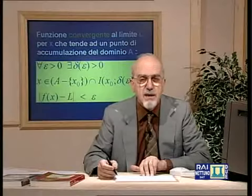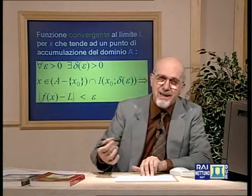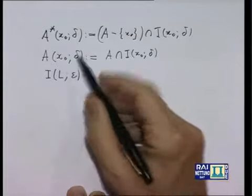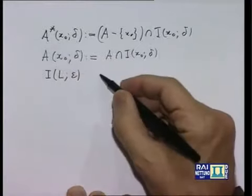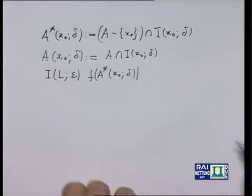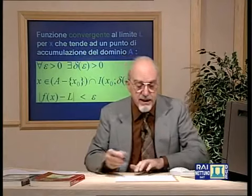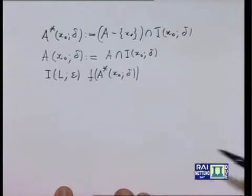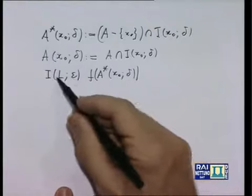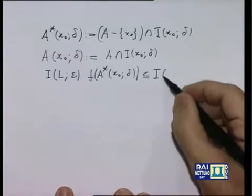Utilizzando questa abbreviazione, posso formulare la nozione di funzione convergente, di limite finito — cioè limite appartenente a R — dicendo che comunque si prenda un intorno di centro L e raggio epsilon, si può trovare un insieme del tipo A*(x₀, delta), tale che la sua immagine ad opera di F, cioè F(A*(x₀, delta)) — l'insieme dei valori che F associa agli x appartenenti a questo insieme — sia contenuta nell'intorno precedentemente fissato. La relazione si scrive: F(A*(x₀, delta)) ⊂ I(L, epsilon).